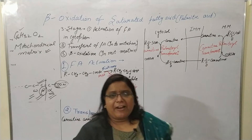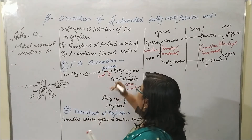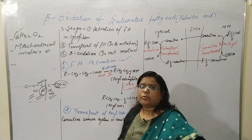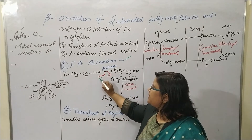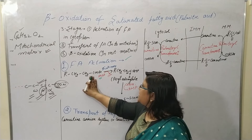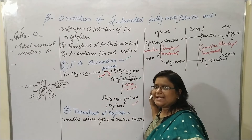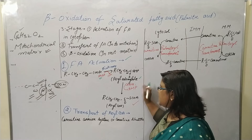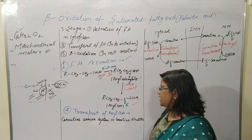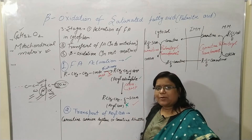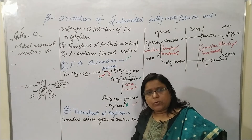During fatty acid activation, ATP combines with the fatty acid and converts it into acyl adenylate. This acyl adenylate is then converted into acyl coenzyme A. This acyl coenzyme A is ready to be transported into the mitochondria.